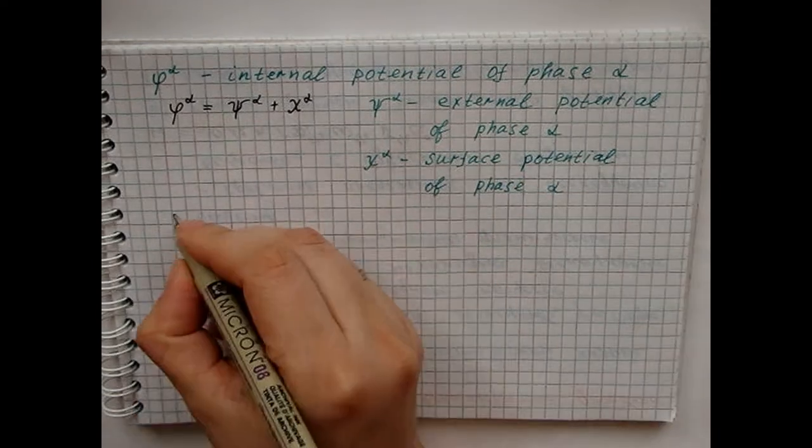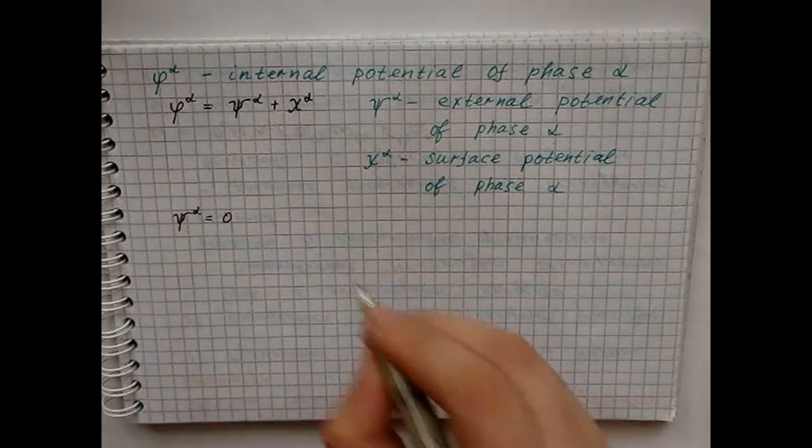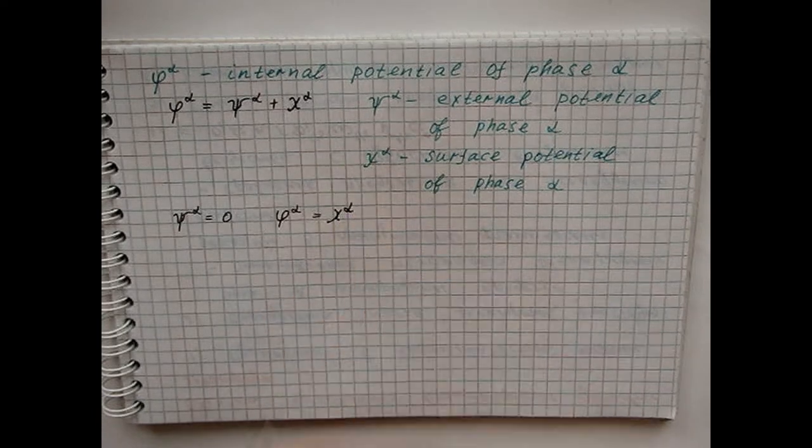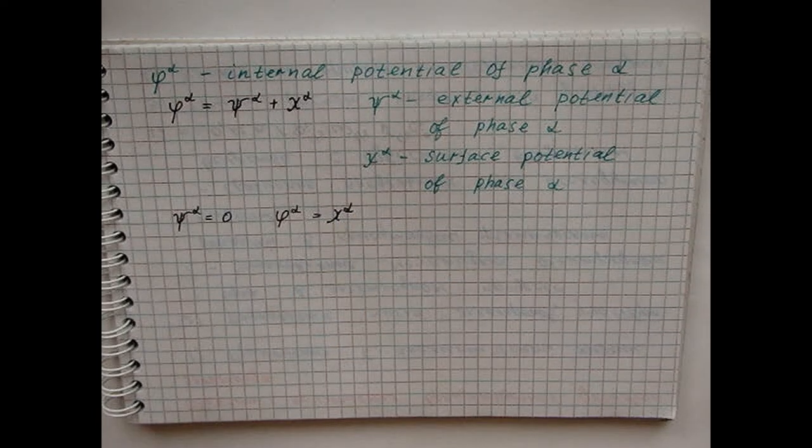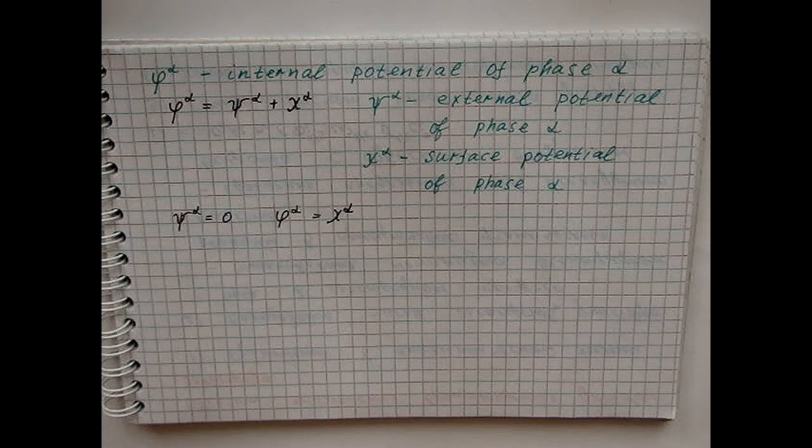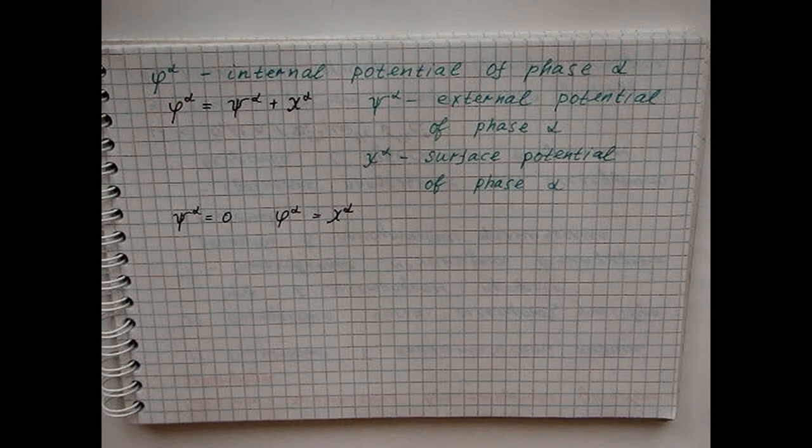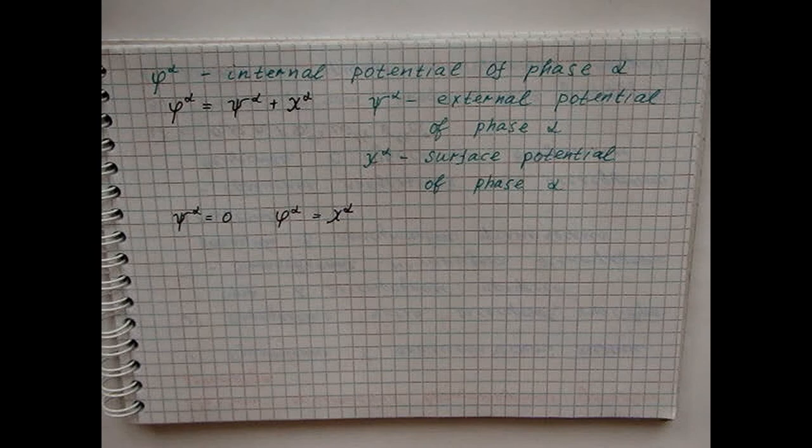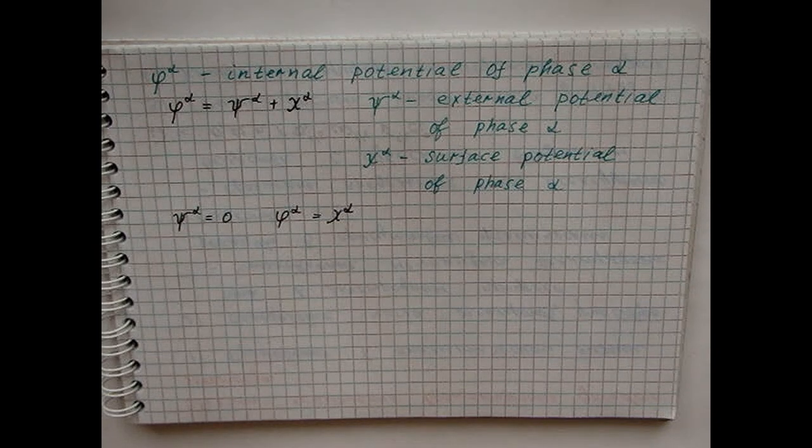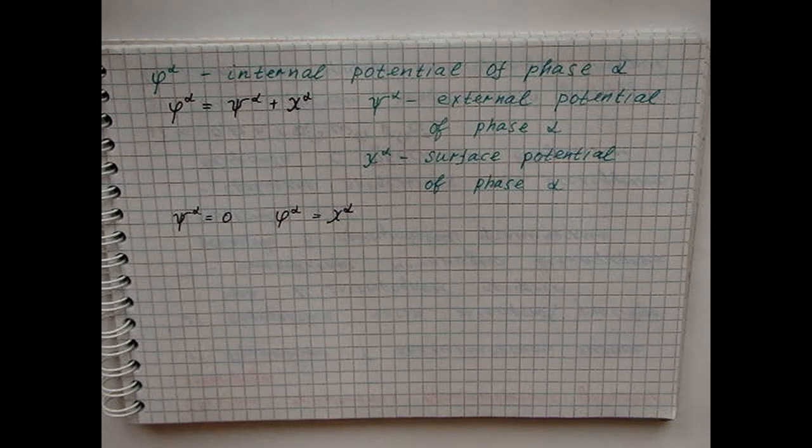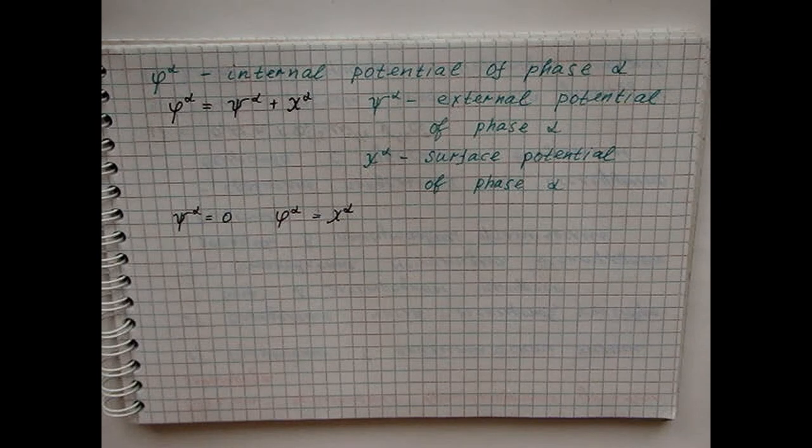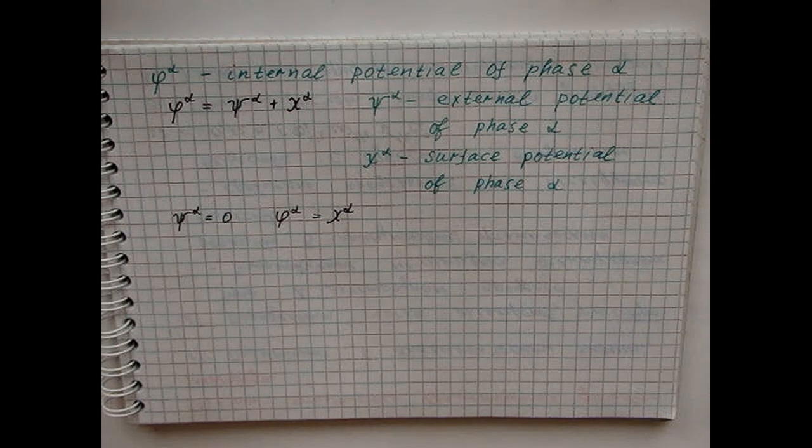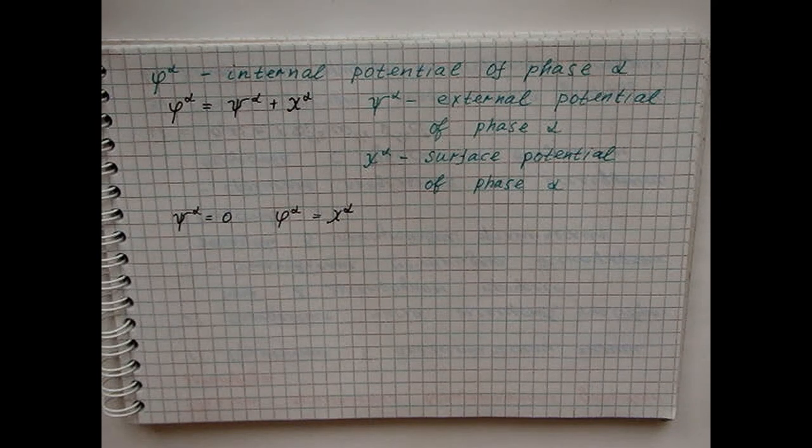If the free electrostatic charge of the alpha phase is zero, then this definition of the internal potential corresponds to the commonly accepted definition of potential as the work of transferring a unit imaginary charge from infinity in a vacuum to a given point. Thus, it is assumed that a single charge reacts only to an external electric field and does not interact with the environment.